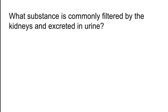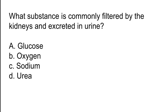Which substance is commonly filtered by the kidneys and excreted in urine? Options: A) Glucose, B) Oxygen, C) Sodium, D) Urea. The correct answer is option D. Urea is the substance commonly filtered by the kidneys and excreted in urine.